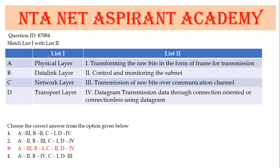Next, match the following. Physical layer: transmission of raw bits over a communication channel — match is A3. Data-link layer: transforming raw bits in the form of a frame — match is B1. So A3, B1, the right answer is option 3.